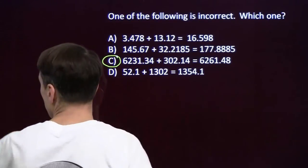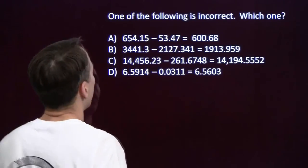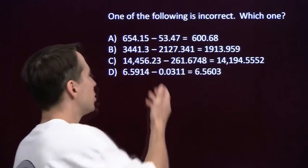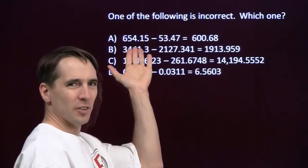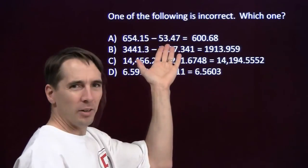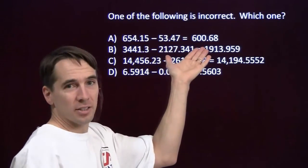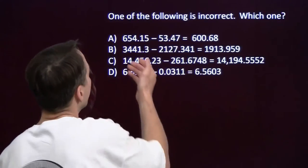On to some subtractions. We're going to do the same thing — a little estimation. On my first one, I've got a number that's around 650, and I'm subtracting a number around 50. I should get a number that's around 600. That one's okay.